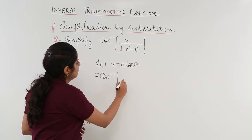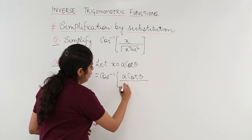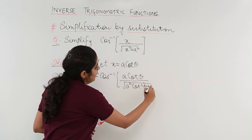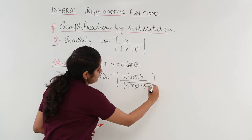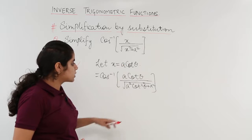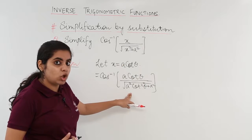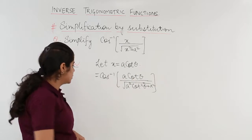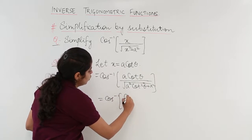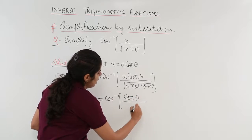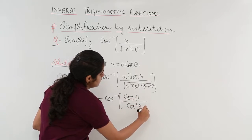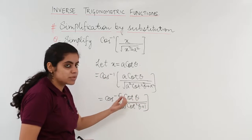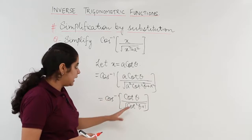With the substitution, the expression becomes cos inverse of (a·cot θ) divided by √(a²·cot²θ + a²). Since a² is common inside the root, it comes out as a, and the a in the numerator and denominator cancel. So it becomes cos inverse of cot θ divided by √(cot²θ + 1).